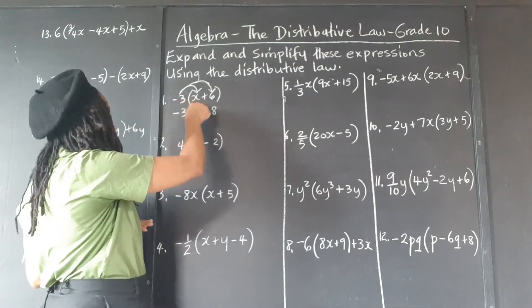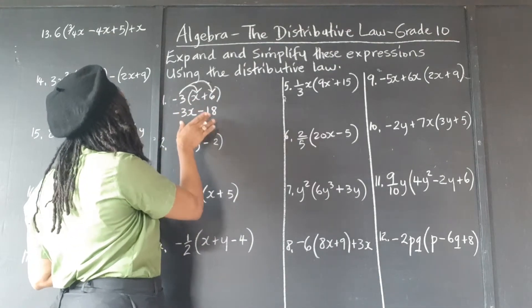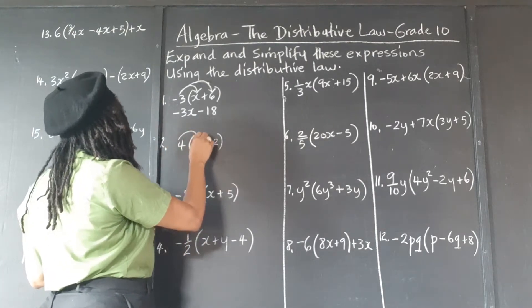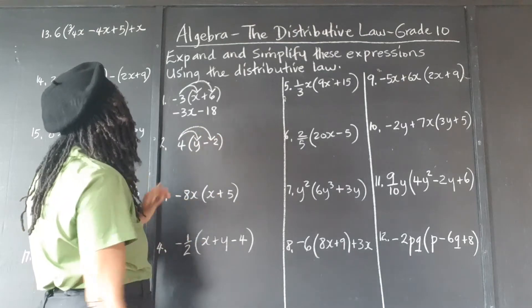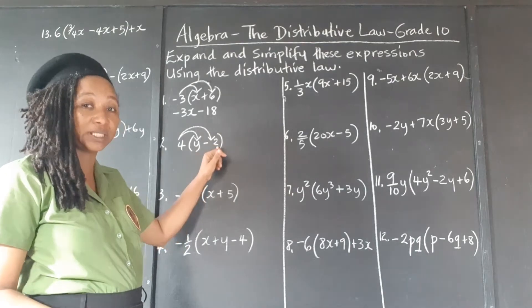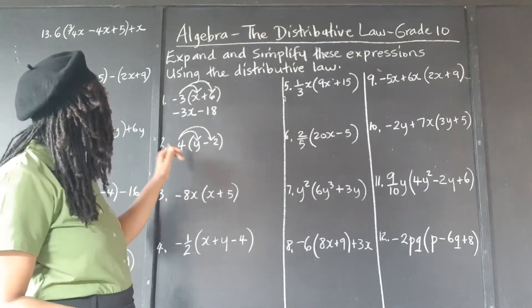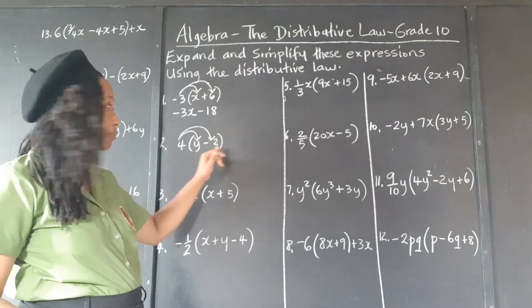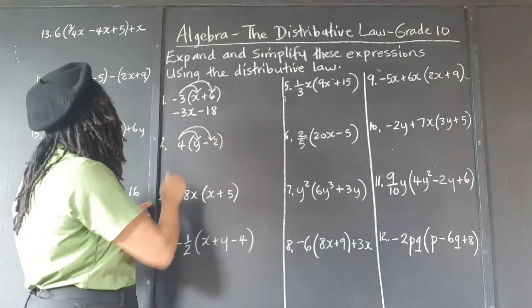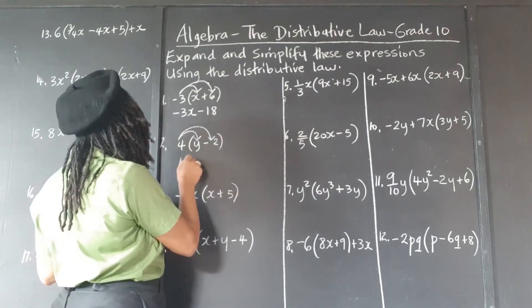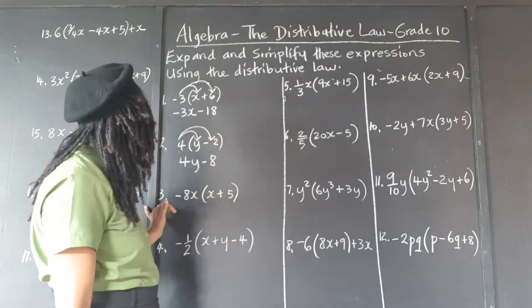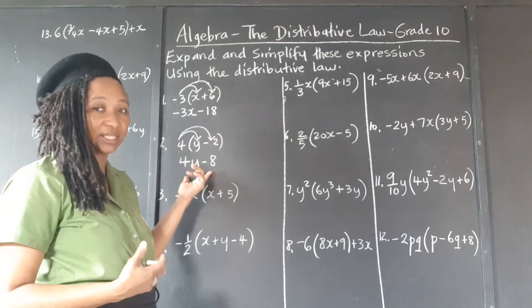So 4 times y, 4 times negative 2. Remember, the sign goes with the number that follows it, so it's 4 times negative 2, not 4 times 2. And it's negative 3 times positive 6. So 4 times y is 4y; 4 times negative 2 is negative 8. And we can't combine these — we can't simplify this anymore.